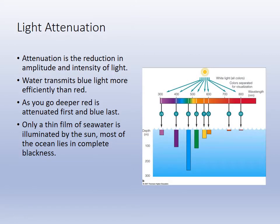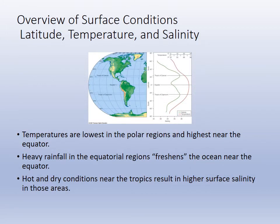Red light dissipates or is attenuated fastest; blue light penetrates the deepest. The equator has the warmest temperatures. There is the least salt at the equator due to all the rain, and then where the tropics are — Capricorn and Cancer — you have a slightly saltier environment because those are areas that don't receive a lot of rain. That's where deserts occur along those tropic lines. They have more evaporation so they're slightly saltier.